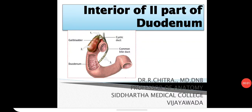Now we will see the interior of the second part of the duodenum. The interior of the duodenum presents circular folds, plica circularis.